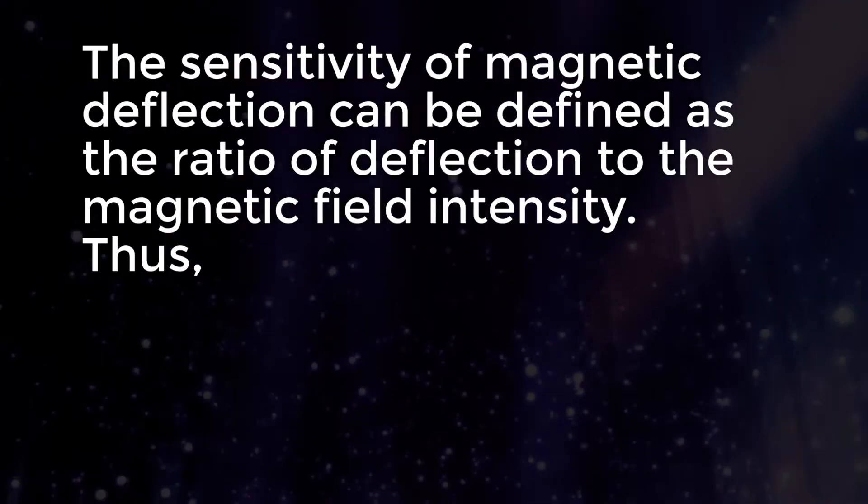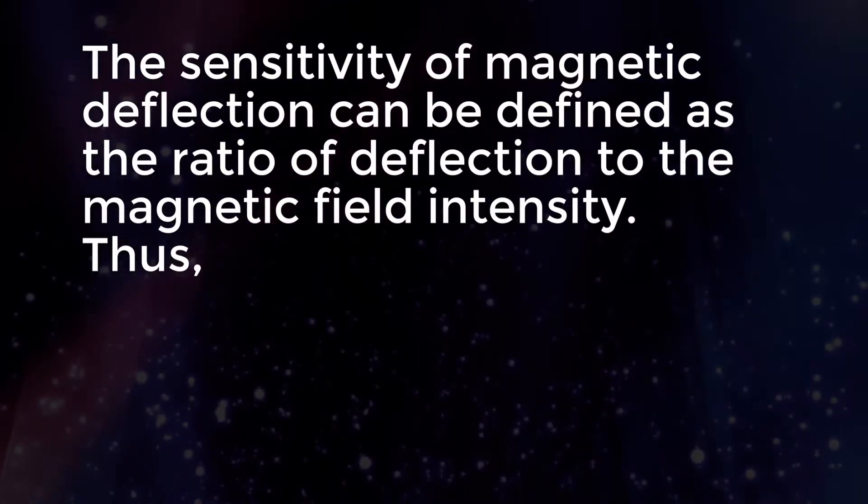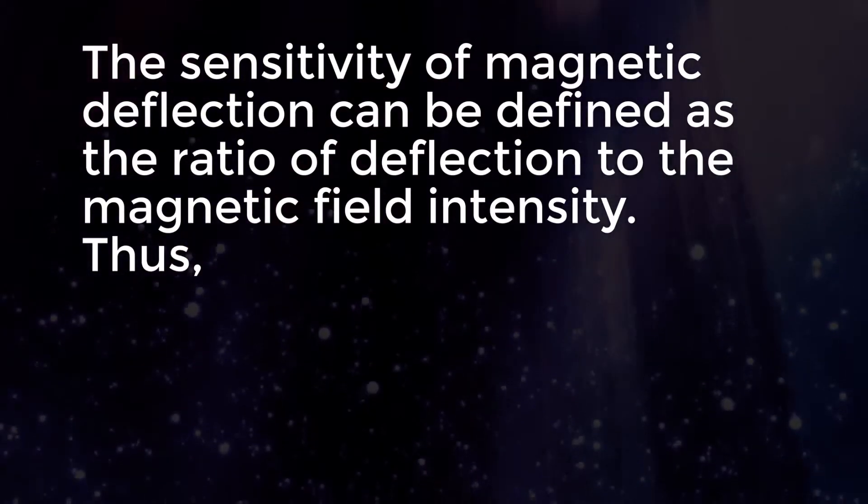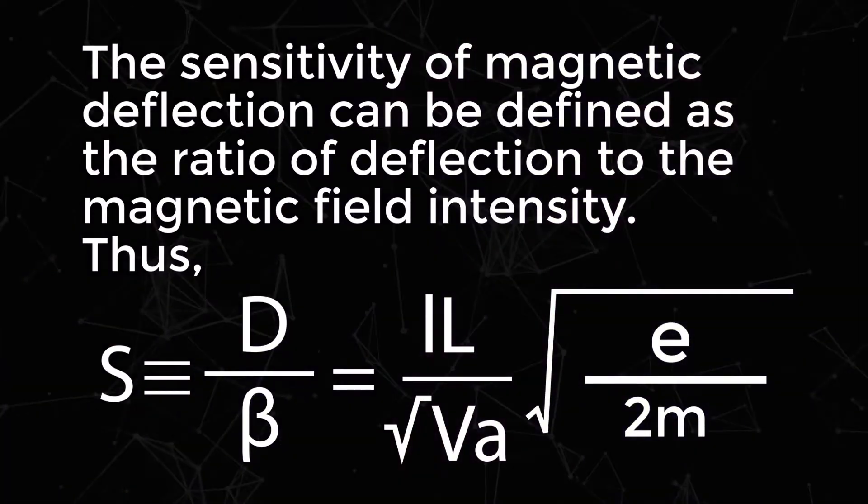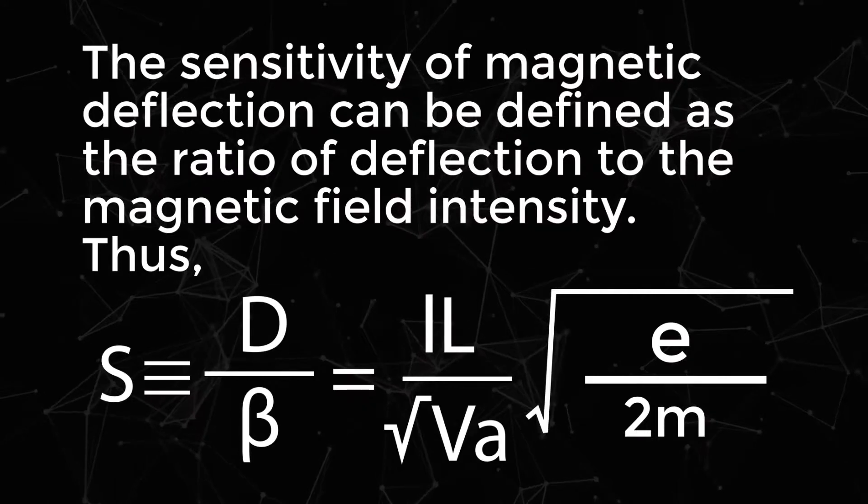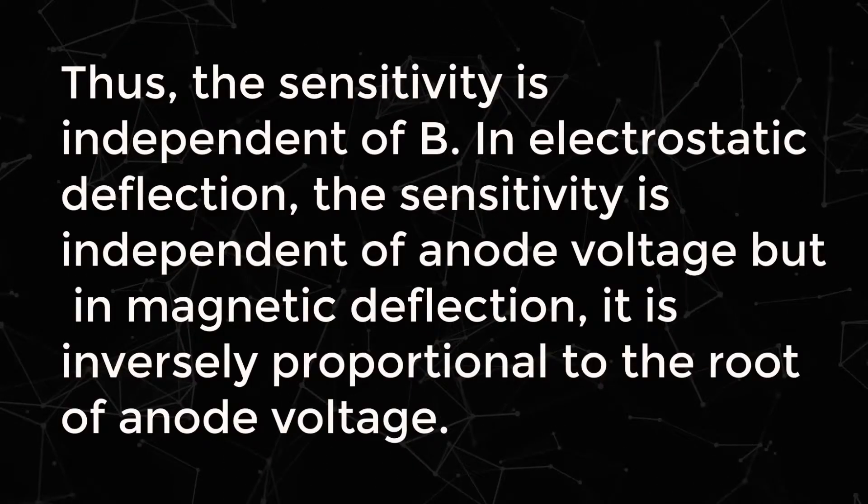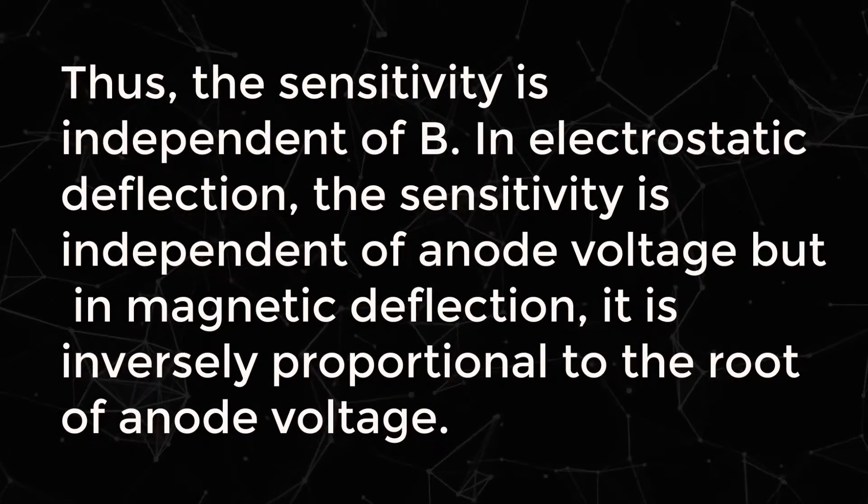The sensitivity of magnetic deflection can be defined as the ratio of deflection to the magnetic field intensity. Thus, S = D/B = Lℓ by root VA into root of e by 2m. Thus, the sensitivity is independent of B.